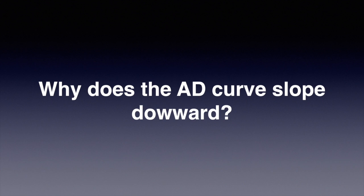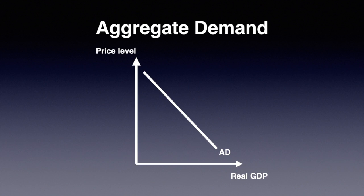This video is an explanation of the shape of the aggregate demand curve. Aggregate demand is the total demand for final goods and services in an economy at a specified time. We plot the price level on the y-axis and real GDP on the x-axis.